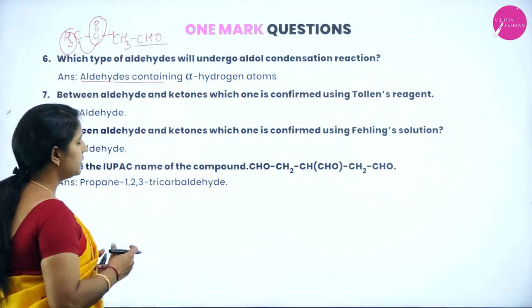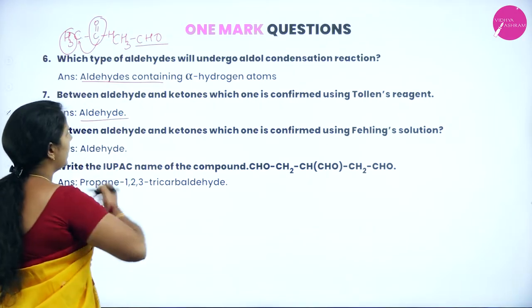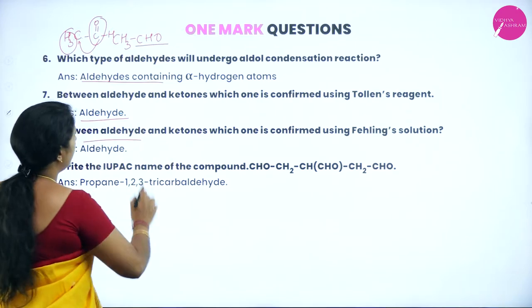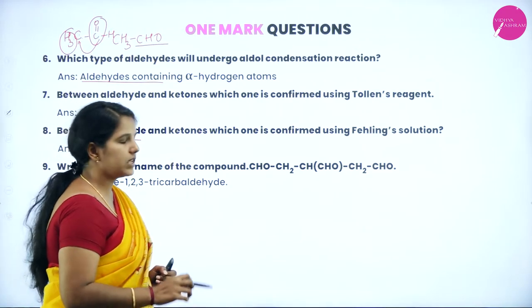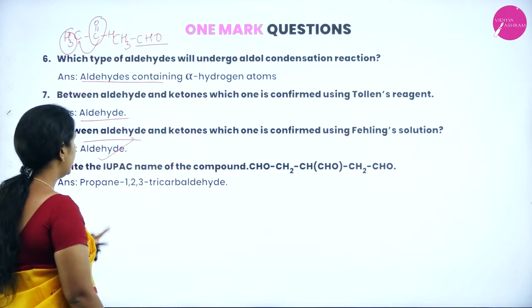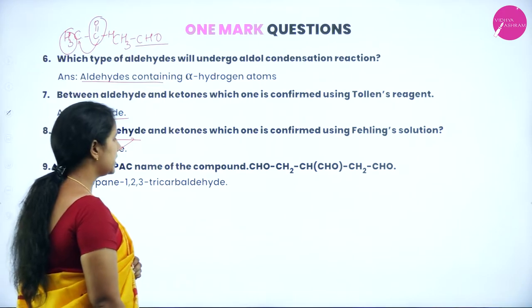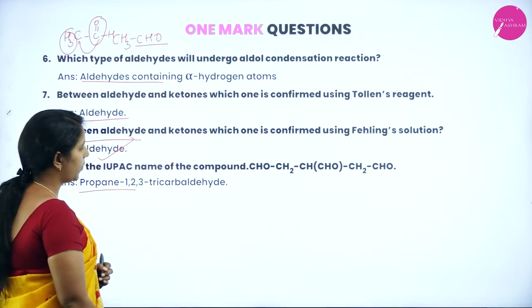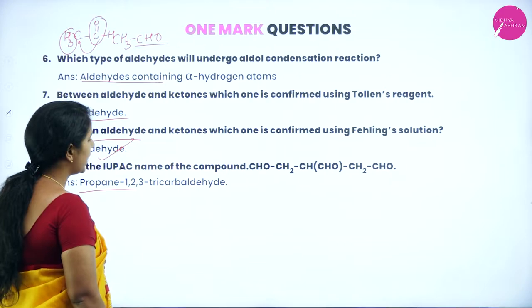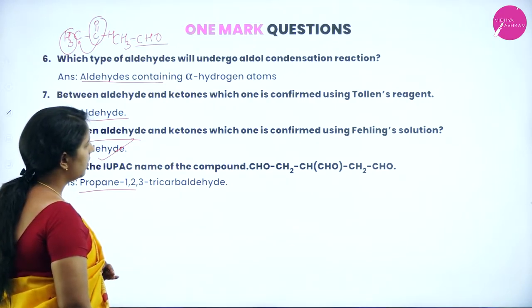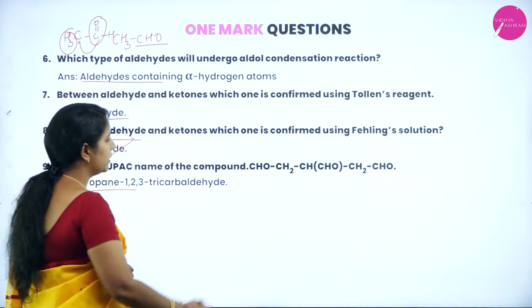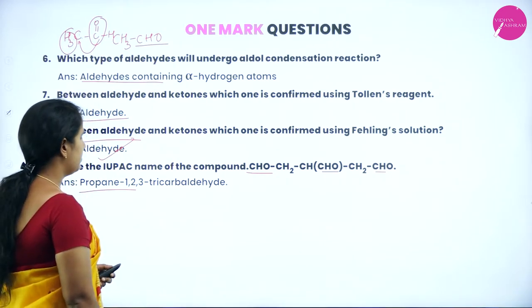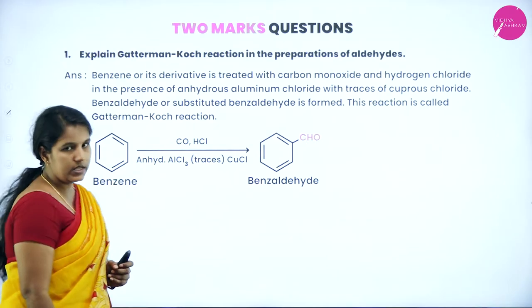Between aldehyde and ketone, which can be confirmed by using Tollens' reagent? It is the aldehyde. Which can be confirmed by using Fehling's solution? That is also an aldehyde. Then write the IUPAC name of the compound CH₂(CHO)·CH(CHO)·CH₂CHO — the name of this compound is propane-1,2,3-tricarbaldehyde, because there are three aldehyde groups attached to the three carbon atoms.